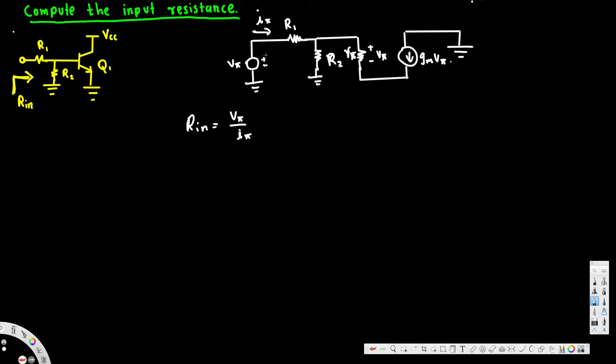Okay, V phi over I phi. Now if I apply Kirchhoff voltage law, KVL, across here, we will have negative V phi plus I phi R1 plus I phi.